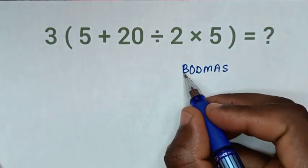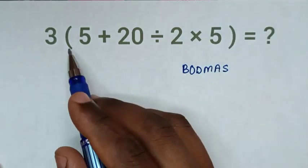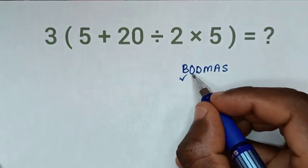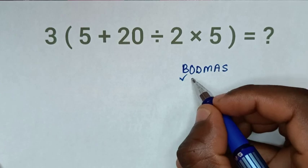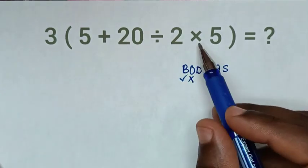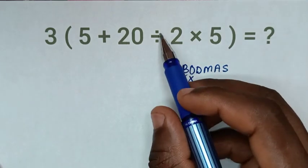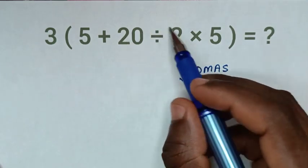B is bracket whereas we have bracket here. So we have bracket. O is order or exponent. In here we don't have order or exponent in this problem. D is division whereas we have division here inside the bracket.